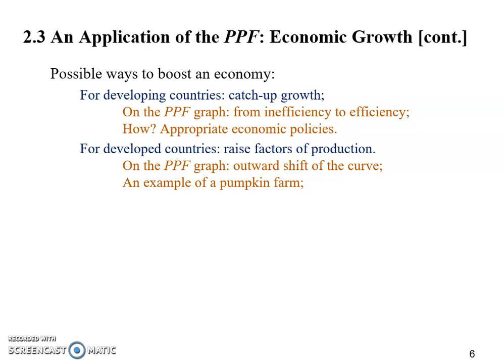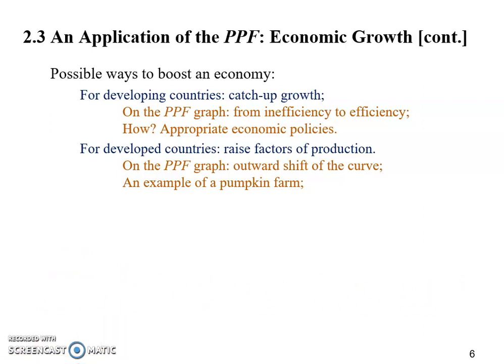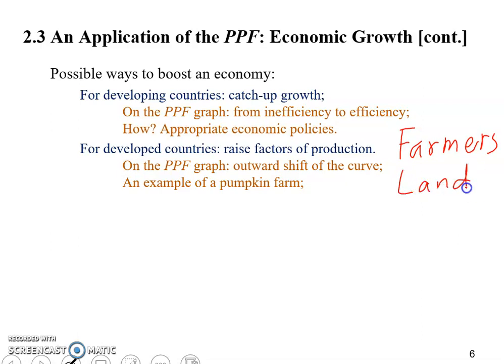Let's continue our discussion. I'm going to write the resources on the slides so that we don't have to switch back and forth between the slides and the whiteboard. First of all, many of you would probably say we need more farmers — if you have more helpers in the fields, then you can produce more. You probably also want more land to be able to grow pumpkins. And what about tractors? You probably need tractors, or better, more productive tractors.